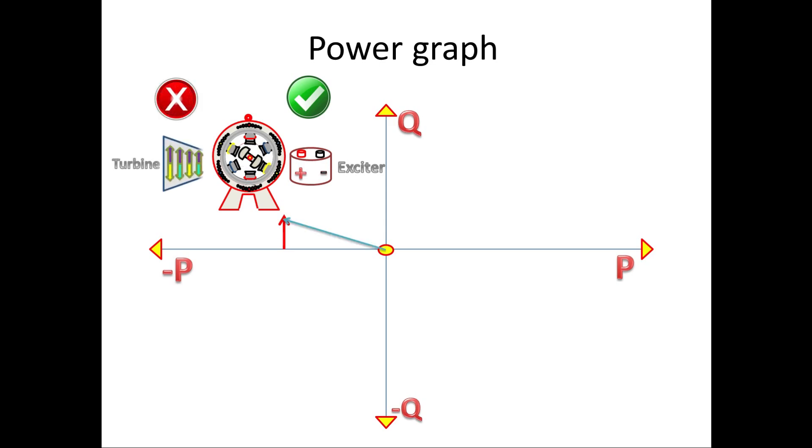In this case, let us consider turbine is not working. If this is connected to grid, then the generator gets rotating power from the grid. Since it takes power from the grid, P will be minus. This positive Q and negative P combination comes under second quadrant.